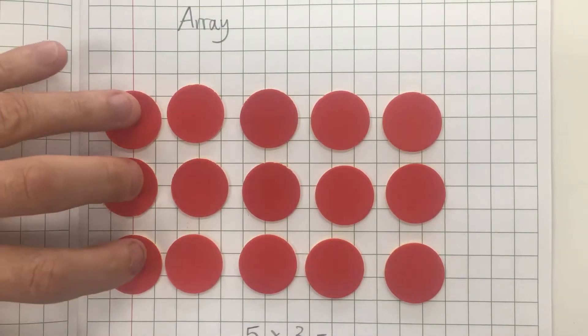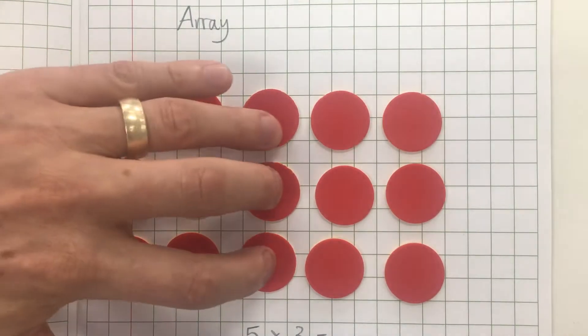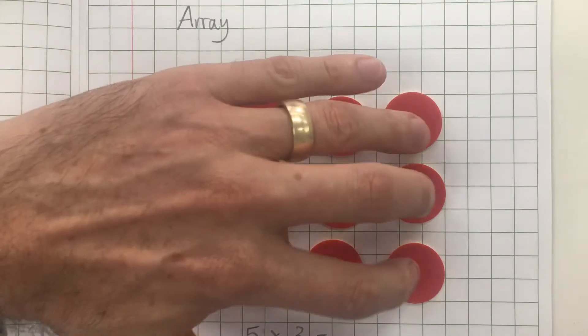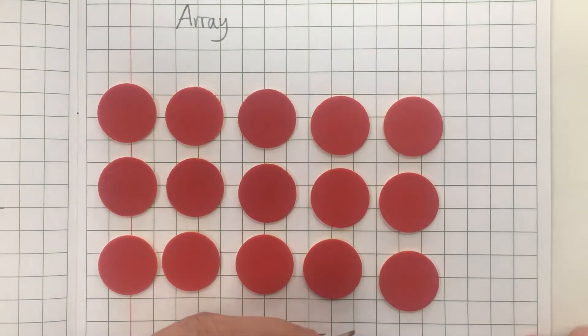So if I count in threes: three, six, nine, twelve, fifteen, I can get to the answer.